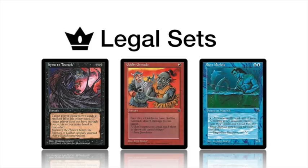This card is so powerful — it's a sorcery. For two black you get card advantage because you give one card and your opponent loses two cards at random; they can't even choose. So in Eternal Central, discard decks and mono black are much stronger thanks to Hymn to Tourach. In the middle you see Goblin Grenade, which is great for goblin builds — you sacrifice a goblin to deal five damage to a target player, all for just one red mana.